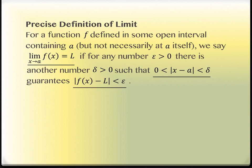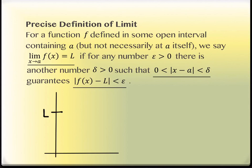For a function f defined in some open interval containing a, but not necessarily at a itself, we say the limit equals the number L if for any number epsilon greater than 0 — epsilon is the distance on the y-axis — we can find a corresponding delta on the x-axis.